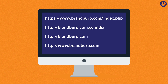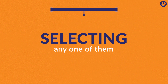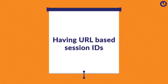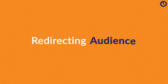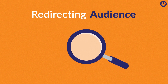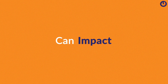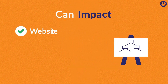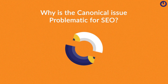Search engine spiders have a hard time indexing multiple URLs and therefore end up selecting any one of them on a random basis. Having URL-based section IDs can also confuse search engine spiders in redirecting the audience to the original page. The inability of Google to index the original website can impact your website more if you are trying to rank your business in a highly competitive market.